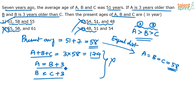You can solve the equations as well — substitute B equals C plus 3 and A equals C plus 6, express everything in terms of C, and verify. But why solve equations when you can eliminate options smartly? Options 3 and 4 are eliminated because A is not greater than B, and option 2 is eliminated because the values don't satisfy the average of 58. Hence, option 1 is the answer.